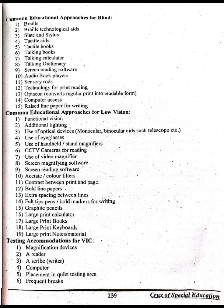Bold line papers; extra spacing between lines; felt tip pens and bold markers for writing; graphite pencils; large print calculator; large print books; large print keyboards; large print notes and materials. Testing accommodations for low vision include: magnification devices, oral reader, scribe, writer, computer placement in a quiet testing area.